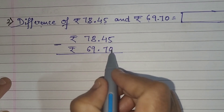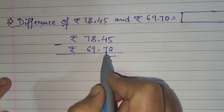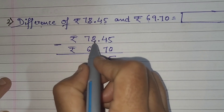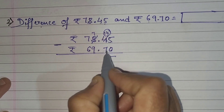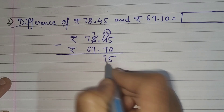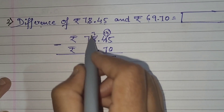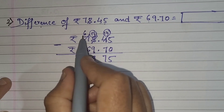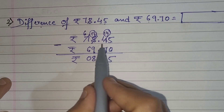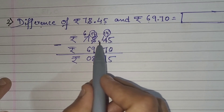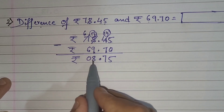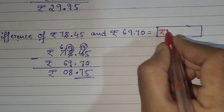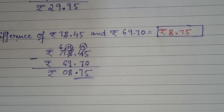5 minus 0 is 5. 4 minus 7 — not possible, so borrow 1 from the next place. This becomes 7 and this becomes 14. 14 minus 7 is 7. Now 7 minus 9 — not possible, borrow again. This becomes 6 and this becomes 17. 17 minus 9 is 8. 6 minus 6 is 0. Place the decimal point after 2 digits. Your answer is 8 rupees 75 paise.